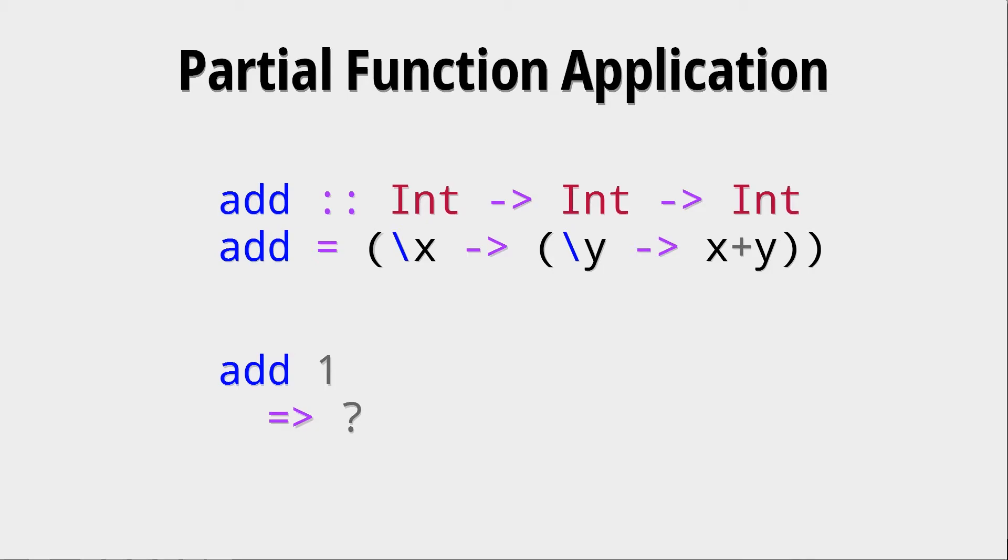In another programming language we would say well this function takes two arguments and only one is applied so this is an error, but in Haskell this isn't true because add implicitly is a function that only takes one argument and then returns a new function.